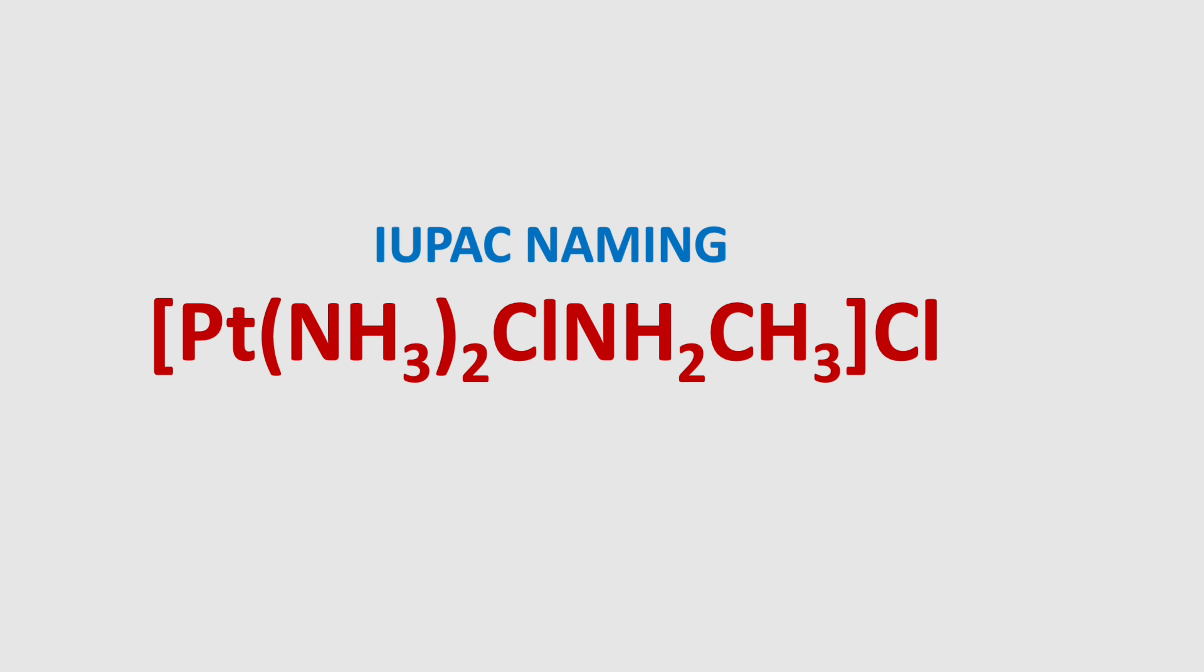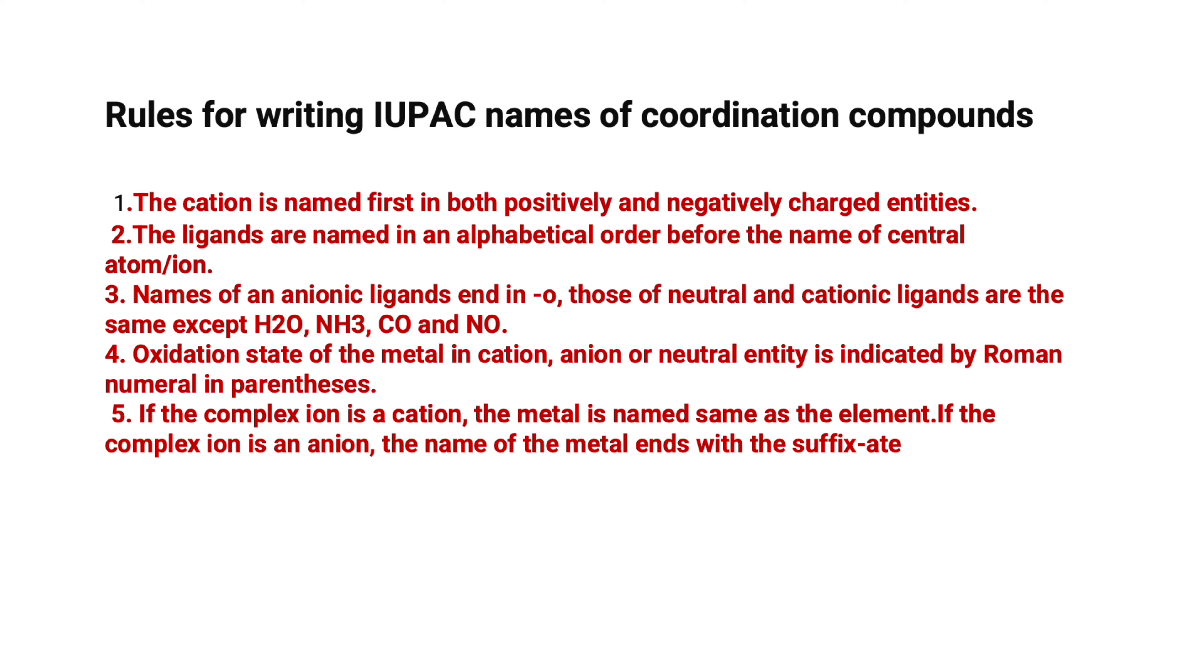To write IUPAC names certain rules are there we need to follow. As per the rules, name the cation first, then name the ligands in alphabetical order before the name of the central atom or ion. Names of anionic ligands end in O. Those of neutral and cationic ligands are the same except H2O, NH3, CO and NO.